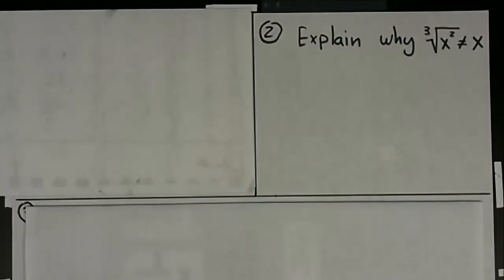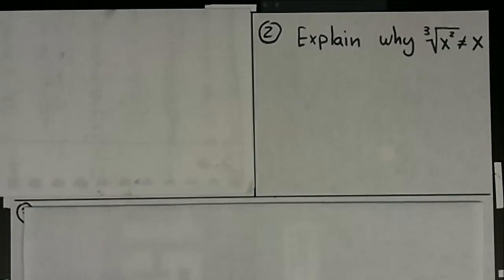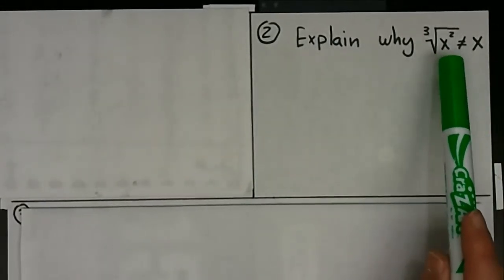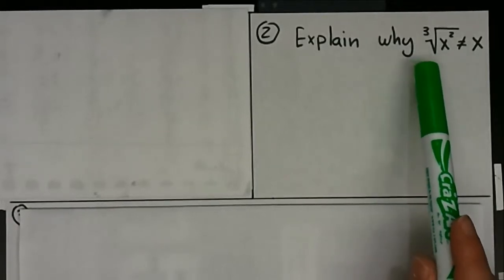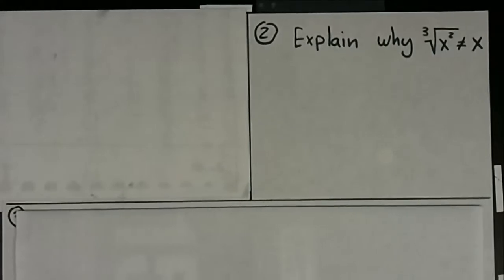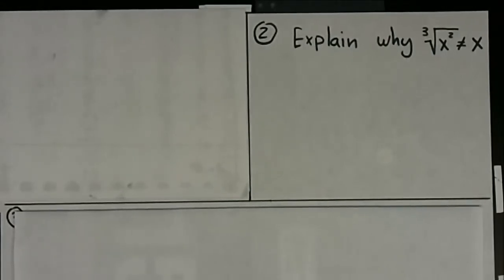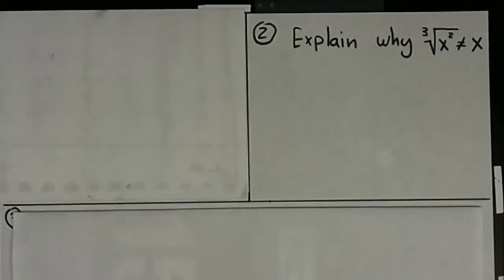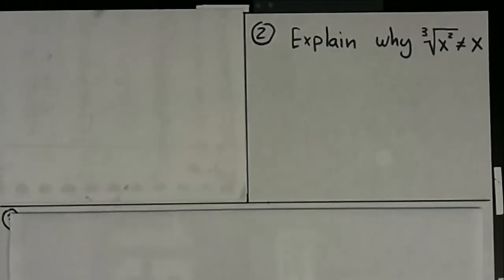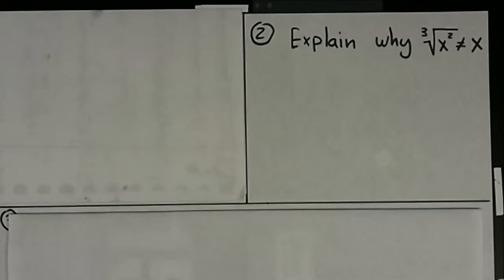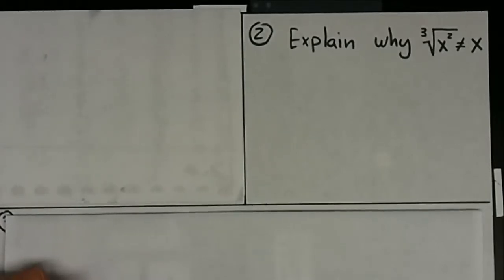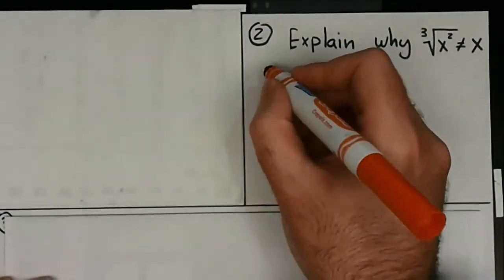Let's take a look at number two. Two says: explain why when you take an exponent to the second power under a radical to the third power, it does not equal out to just the base. This is in many ways the opposite of number one. In number one you had matching powers; here you don't have a matching power, so you can't cancel out the radical and the exponent.